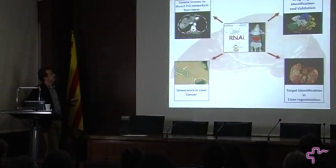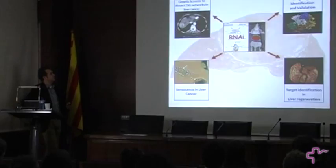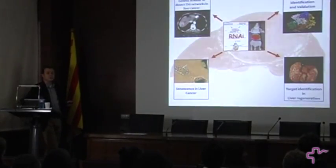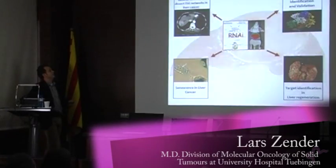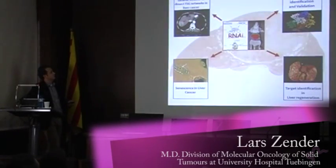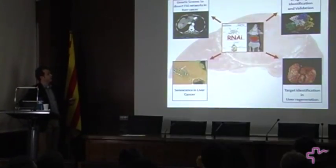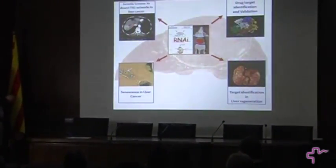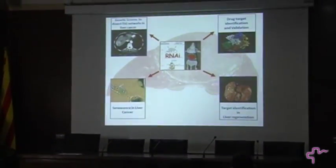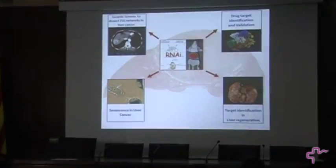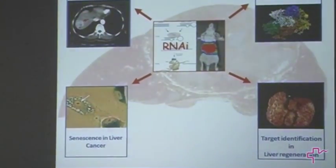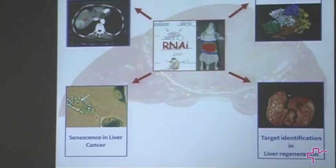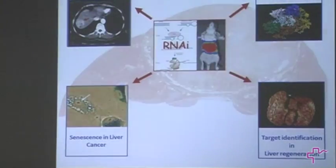A special feature is that we developed systems so that we can conduct shRNA screens directly in mice in vivo. We do this to dissect tumor suppressor networks in liver cancer and also more recently in other tumor types. We can conduct so-called lethal screens, synthetic lethality screens, to directly pinpoint new drug targets in cancer.